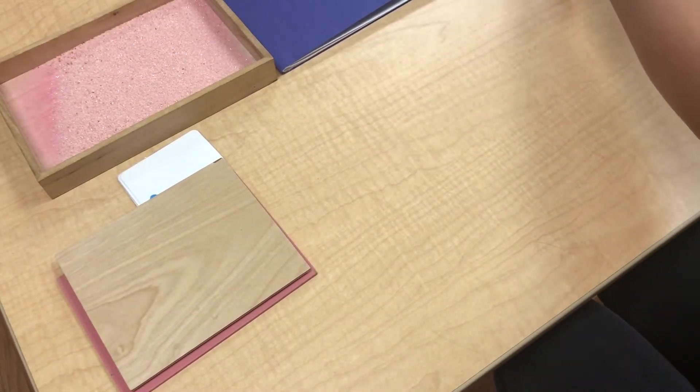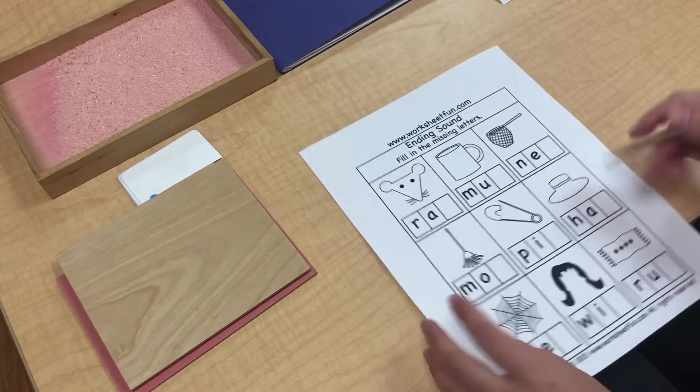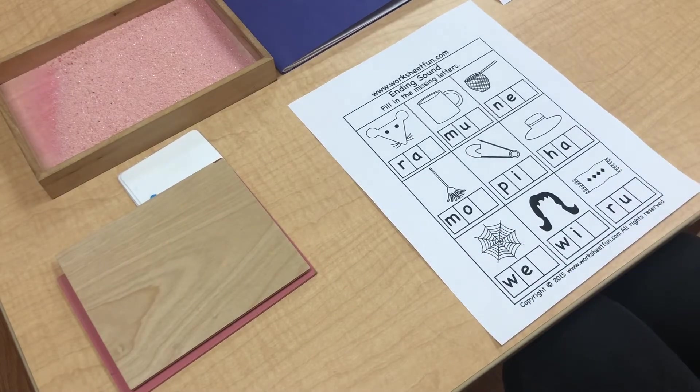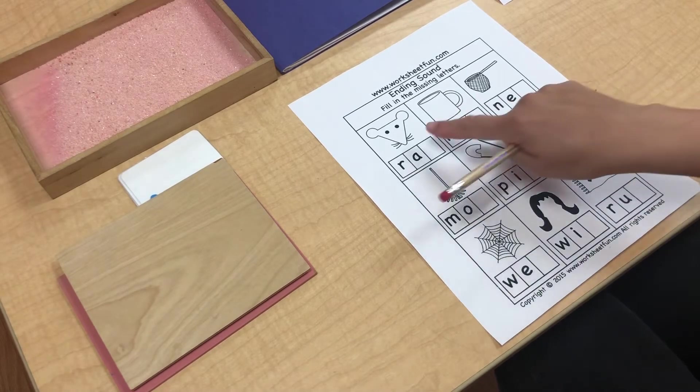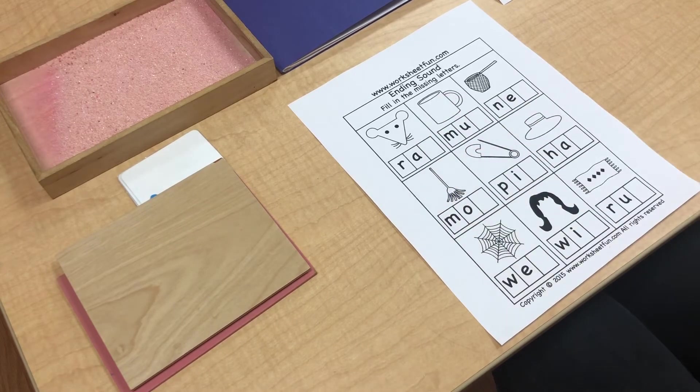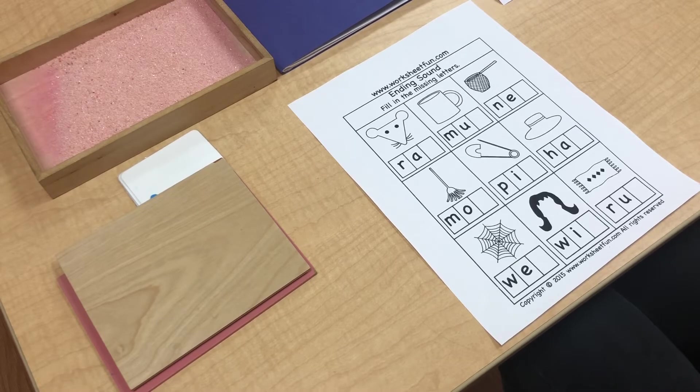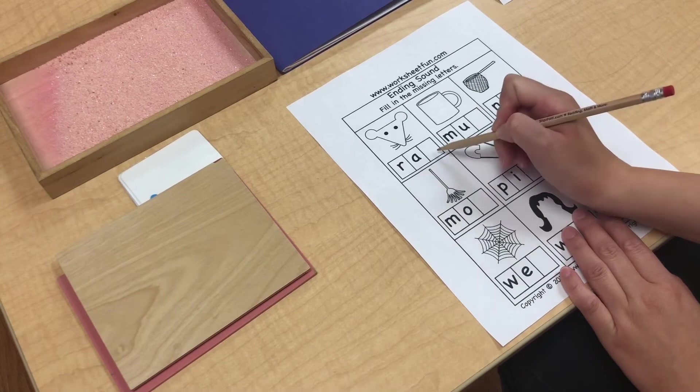Now we are going to review the ending sound. Can you have your ending sound worksheet ready? We are going to fill in the missing letters. Now let's take a look at the first picture. This is a rat. Can you listen carefully to the last sound that the word rat makes? Rat. That's right.